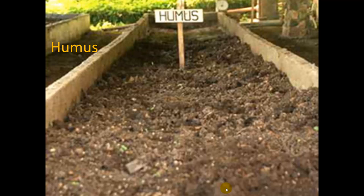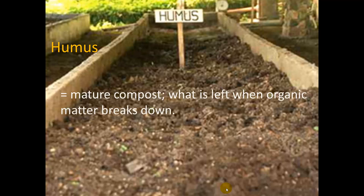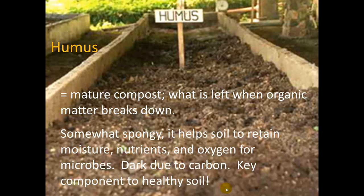Let me give an example of humus. You can buy it in stores and add it to your soil if you're doing gardening — it's a great additive. It is mature compost: what is left when organic matter breaks down. People who do composting end up with humus. It is incredibly rich in nutrients, somewhat spongy, and helps soil retain moisture, nutrients, and oxygen for microbes. It is dark due to carbon, and it's a key component to healthy soil.